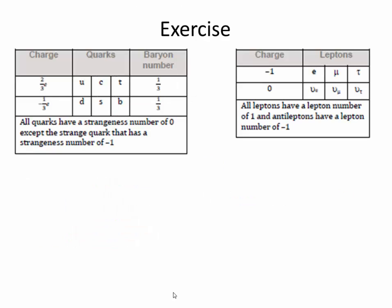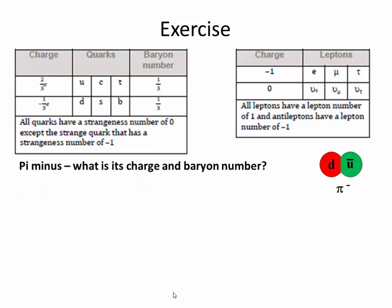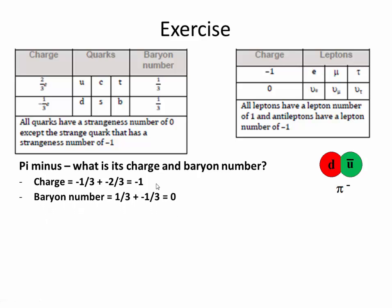Here's an exercise. From the textbook table, let's look at the pi-minus, which is down and anti-up. What is its charge and its baryon number? The charge of a down quark is negative one-third. An up quark is two-thirds, so an anti-up is negative two-thirds. Therefore, the total charge is negative one-third plus negative two-thirds equals negative one. The baryon number: one-third plus negative one-third equals zero. So the charge is minus one and the baryon number is zero — it is not a baryon.